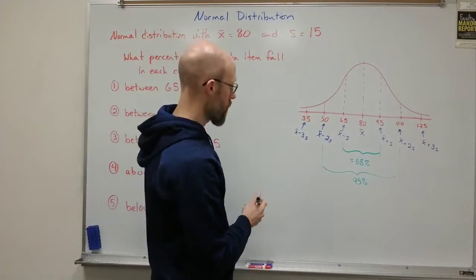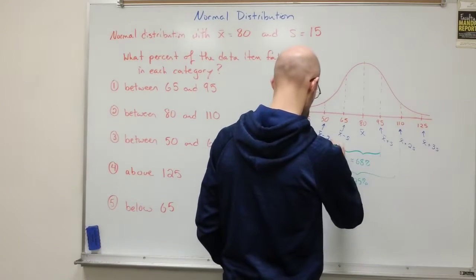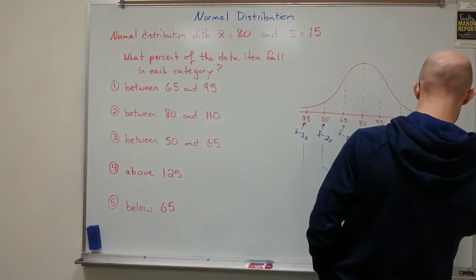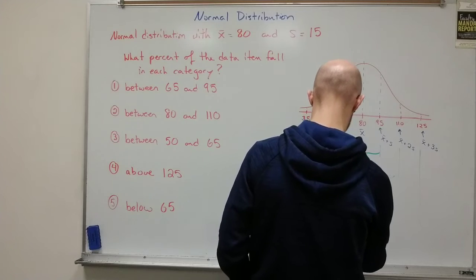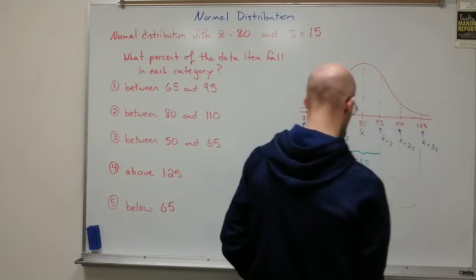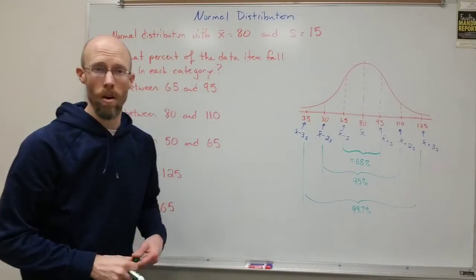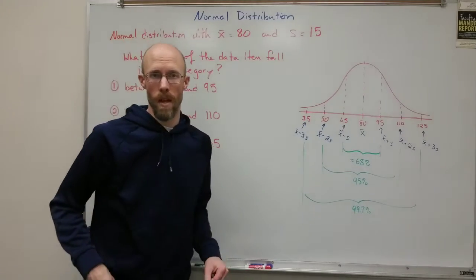95% will fall between two standard deviations on either side. And of course, 99.7% will fall between three standard deviations on either side. So that almost encompasses all of the data when you get within three standard deviations.